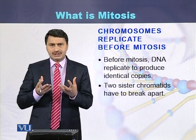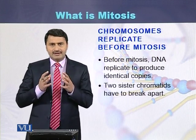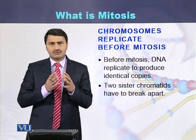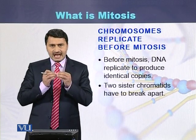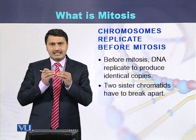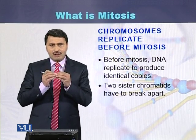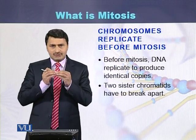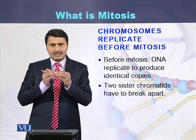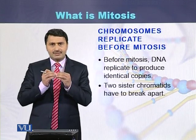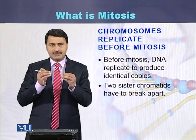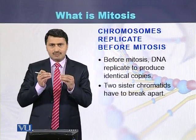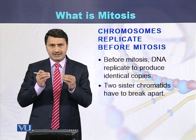DNA produces its copies and one chromosome is converted into two chromosomes which are attached with the centromere. They are called sister chromatids. During mitosis, the sister chromatids separate from each other. The terms used are non-replicated chromosome and replicated chromosome.